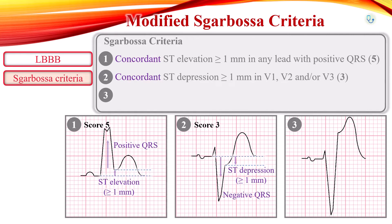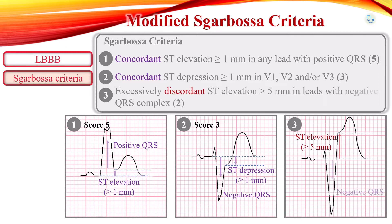The third criterion is an excessively discordant ST elevation of at least 5 mm in a lead with a negative QRS complex, which scores 2 points. A total score of 3 or more points has 90% specificity for ST elevation myocardial infarction, but sensitivity is only 36%.